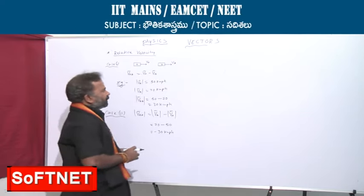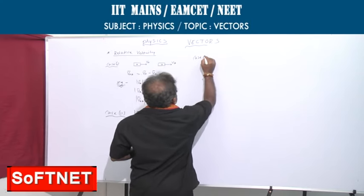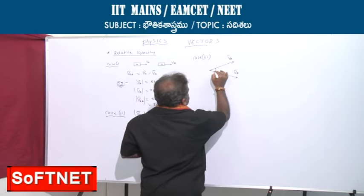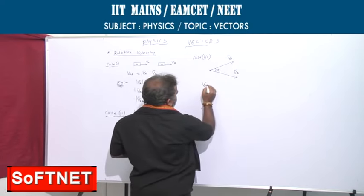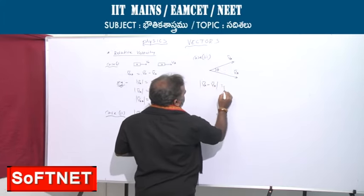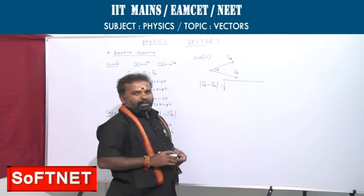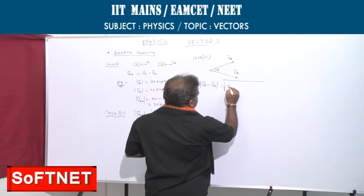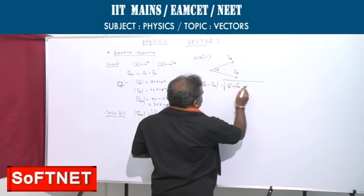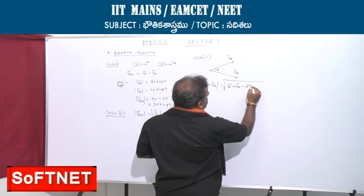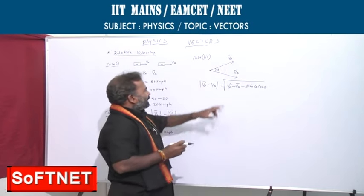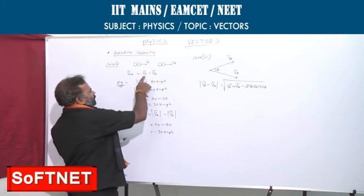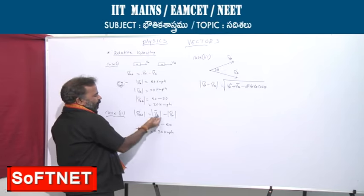If the two vectors are at a certain angle, velocity of A with respect to B in magnitude is calculated using the parallelogram law: root of VA² + VB² − 2·VA·VB·cos theta. If they are in the same direction it is VA bar minus VB bar. If you want velocity of B with respect to A, write VB bar minus VA bar.